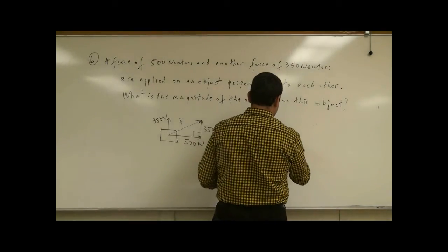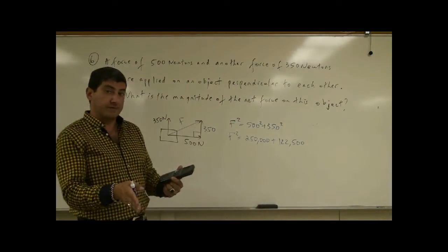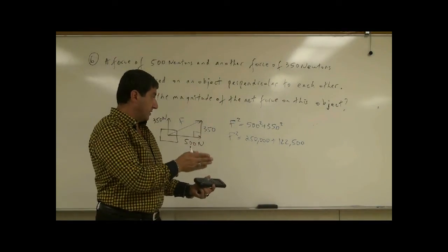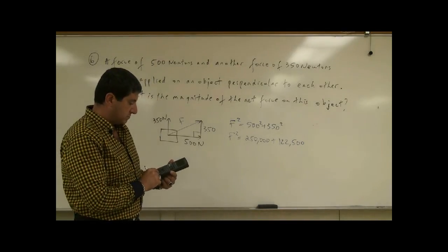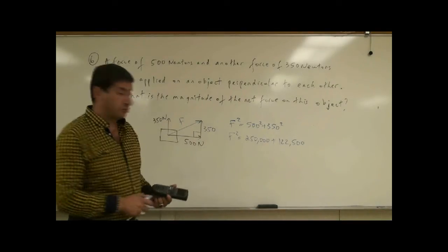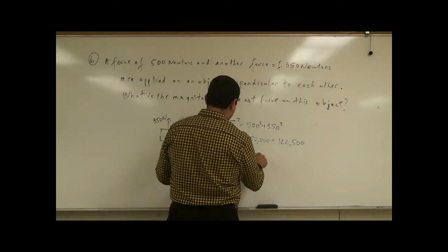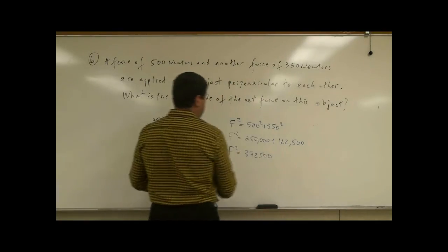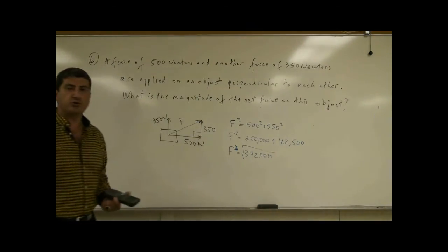Then when you add 122,500 plus 250,000, that's 372,500. F squared equals 372,500.